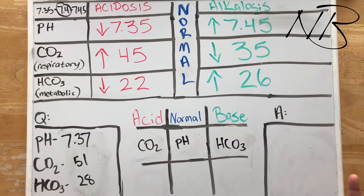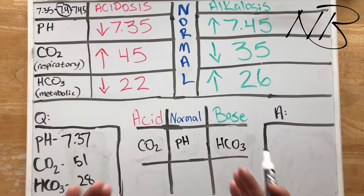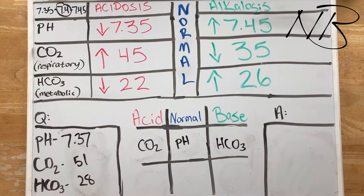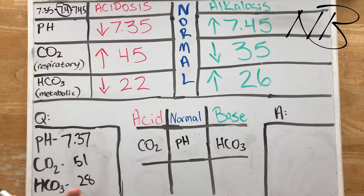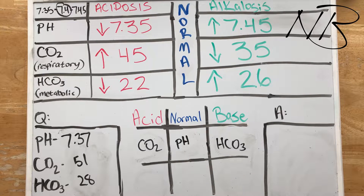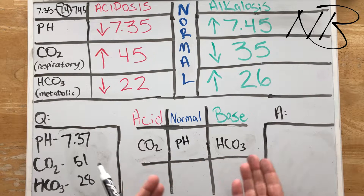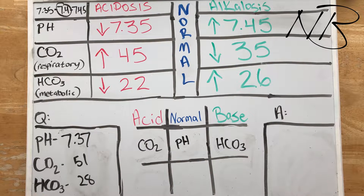Now out of everything I've been teaching you about this tic-tac-toe method, you're probably looking at this and thinking: there's nothing in the same column as the pH. So what the heck do I do with this information?